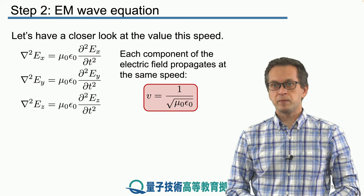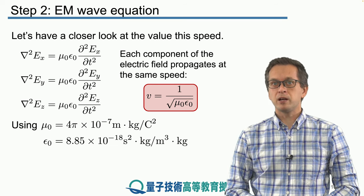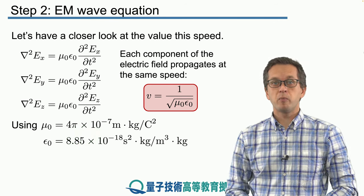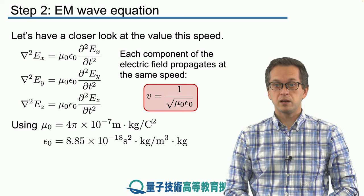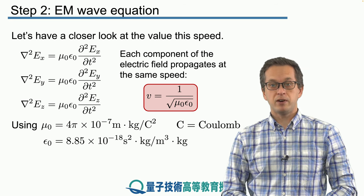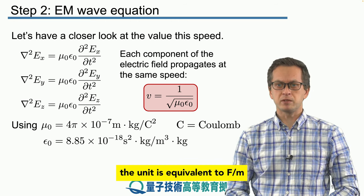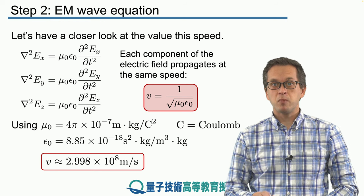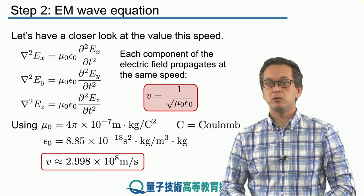When Maxwell derived this expression, people could already measure the permeability and permittivity of free space and had pretty good estimates of the actual values. Mu naught is 4 pi times 10 to the minus 7 meters times kilograms per coulomb squared, where C is notation for coulombs. The permittivity of free space, epsilon naught, is 8.85 times 10 to the minus 12, with units of seconds squared times kilograms over meters cubed — the kilograms cancel upon substitution. You get the remarkable result that the speed of propagation of an electromagnetic wave is approximately 3 times 10 to the 8 meters per second.